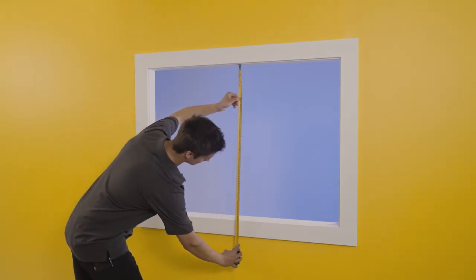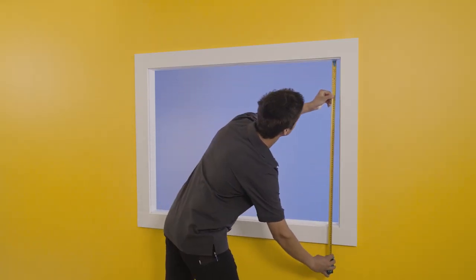Again, take three measurements: left, centre, and right. The smallest measurement is your drop.